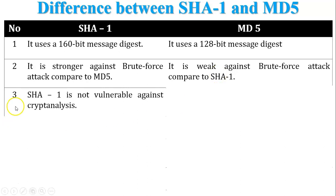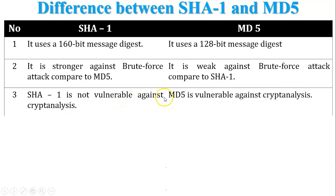Third, SHA1 is not vulnerable against cryptanalysis, whereas MD5 is vulnerable against cryptanalysis. The reason for this difference is the message digest size — SHA1 gives a 160-bit output and MD5 gives a 128-bit output.